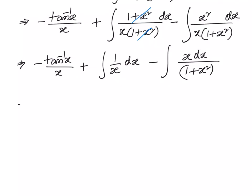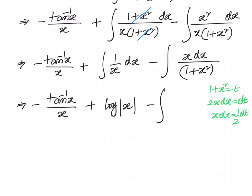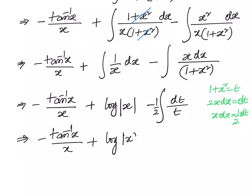Then we have minus the integral of x by 1 plus x square dx. That gives us minus tan inverse x divided by x, plus log x, minus the integral of x by 1 plus x square. To solve this last integral, let 1 plus x square equal t, so 2x dx equals dt, meaning x dx equals half dt. The integral becomes half of dt by t, which is half log t. Substituting back, t is 1 plus x square, so the final answer is minus tan inverse x by x plus log x minus half log of 1 plus x square, plus c.